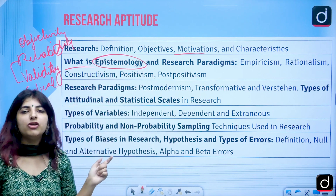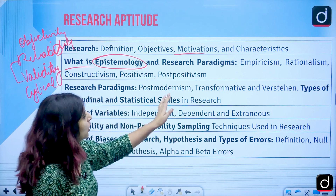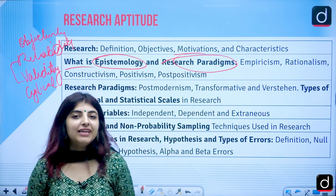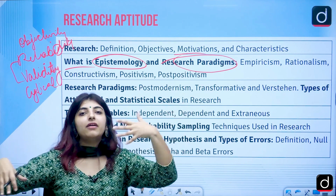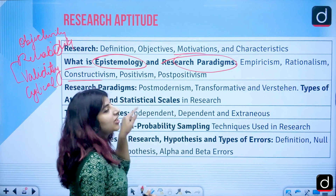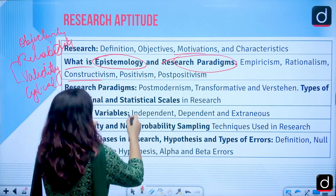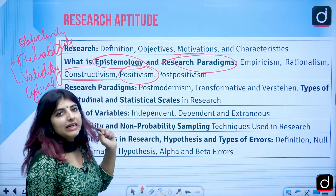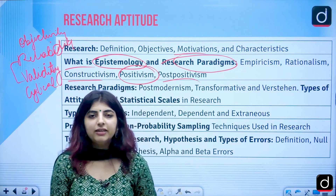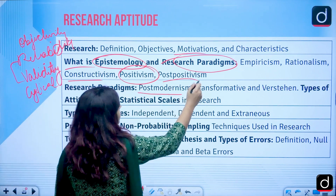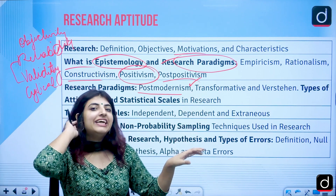Then we will deal with epistemology — the study of knowledge, how we know things, and the different sources and ways of knowing. We will cover different research paradigms: empiricism (learning through experience), rationalism (reasoning with a rational mind), constructivism (how thoughts are constructed, mostly used in teaching-learning), positivism and post-positivism — one related to science, the other to science and common sense — and post-modernism.